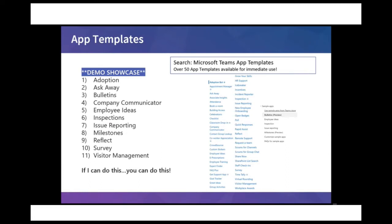I only have so much time, and some of these are really quick. For today I'll be covering an Adoption Bot, Ask Away, Bulletins — which is brand new — Company Communicator, Employee Ideas, Inspections, Issue Reporting, Milestones — also new — Reflect, which is really great in this day and age of COVID, Survey, and Visitor Management. Visitor management is top of mind for everyone as we're all transitioning back to the physical space and want to control people flow in and out of buildings.